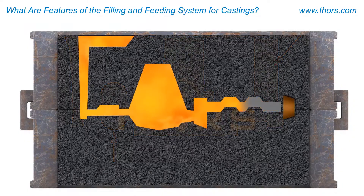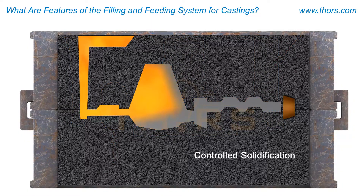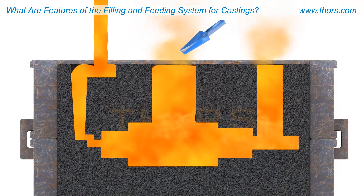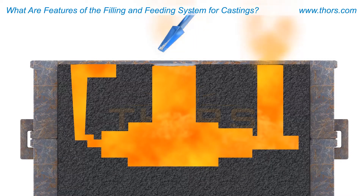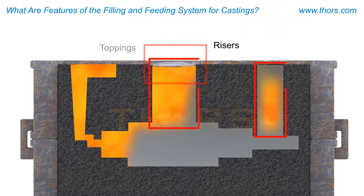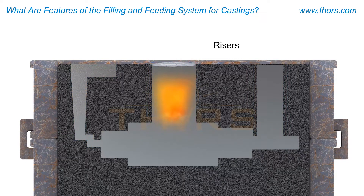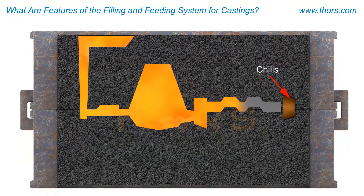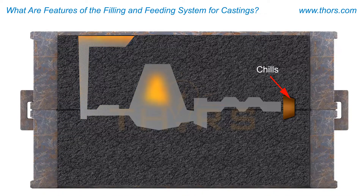Additionally, the feeding system is instrumental in promoting controlled solidification of castings. The feeding system may also include riser sleeves and hot toppings. Risers are generally placed at or near the thicker sections of the casting that solidify last. Chills are metal inserts used to manipulate the thermal gradient to promote directional solidification of the casting.